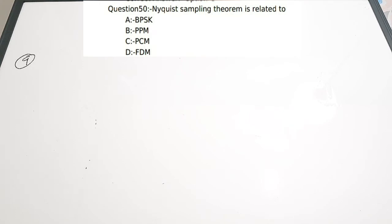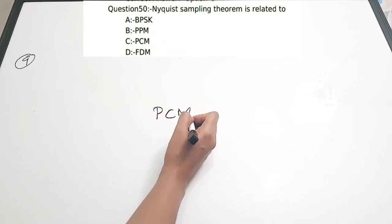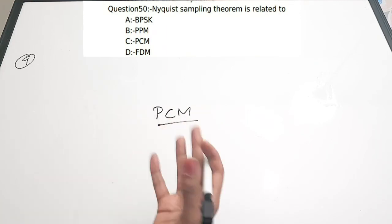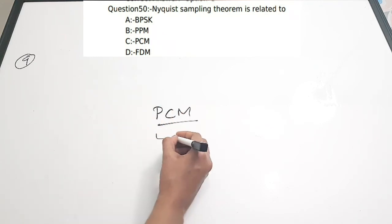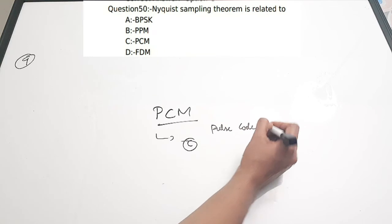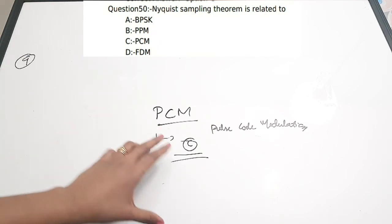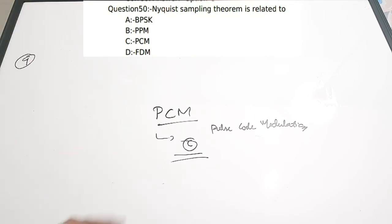Ninth question: Nyquist sampling theorem is related to — A) BPSK, B) PPM, C) PCM, D) FDM. Nyquist sampling is related to digital modulation. The correct answer is pulse code modulation (PCM) because PCM is a digital modulation method where we digitize samples, and while sampling we must follow the Nyquist sampling theorem. Correct answer is option C.